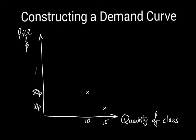If I increase the price to £1, we're starting to get to the point where quite a few people may decide they don't want the cup of coffee at that price — maybe they could find it cheaper somewhere else. So if I increase the price to £1, demand will fall to about 7. If I increase the price to £1.50, demand will fall further to 4. And if I increase the price all the way up to £2, only two people will actually want to buy it at that price.